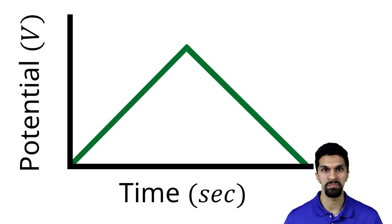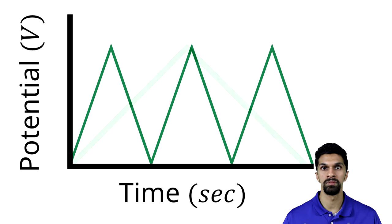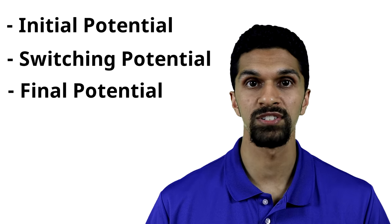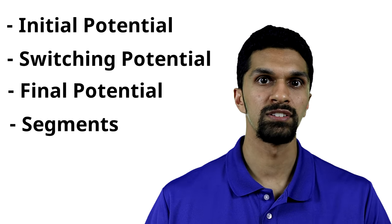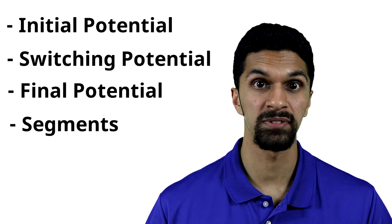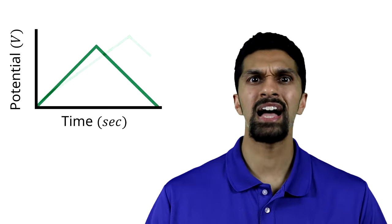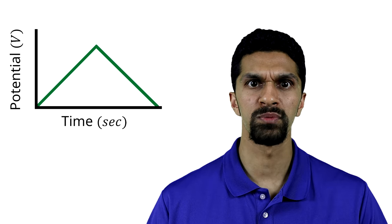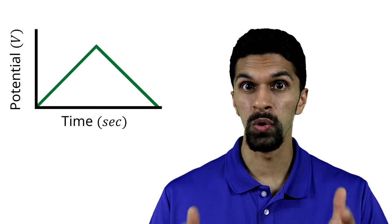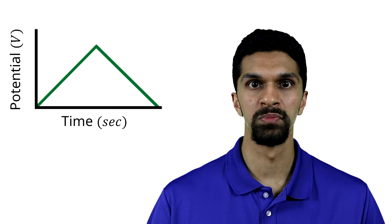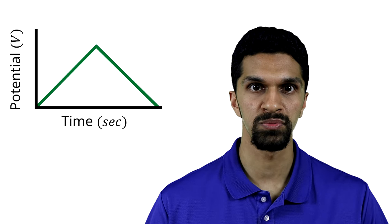This gives us one cycle in a cyclic voltammetry experiment, and a cyclic voltammetry experiment may consist of one or multiple cycles. The initial potential, switching potential, final potential, and number of segments can all be adjusted depending on our electrochemical system. In fact, there's a wide variety of different potential waveforms that can be created just by adjusting these parameters. The classical triangular potential waveform isn't strictly the only waveform used in cyclic voltammetry, but for purposes of this video, we will be sticking with the classical triangular potential waveform.